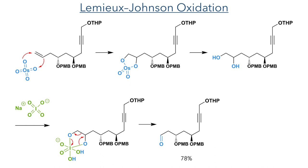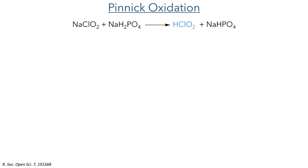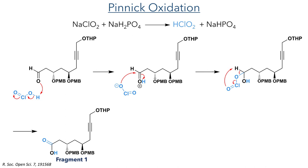This aldehyde was then further oxidised using a Pinnick oxidation. Sodium chlorite is reacted with sodium dihydrogen phosphate to form chlorous acid. This protonates the aldehyde and the chlorate then attacks the carbonyl centre. The tetrahedral intermediate then undergoes a pericyclic fragmentation where a hydrogen atom is abstracted, and the compound is oxidised to a carboxylic acid, completing the synthesis of Fragment 1.